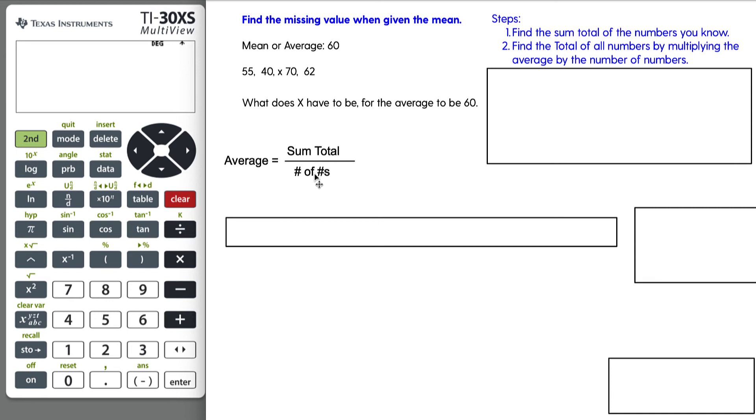We can work backwards. We can actually multiply the average that we know by the number of numbers to get the sum total. And then the third one is subtract what you know, the numbers that you know, these four numbers that we know, from the whole total, and then that'll give us our missing value.